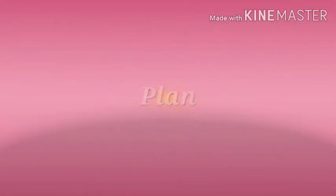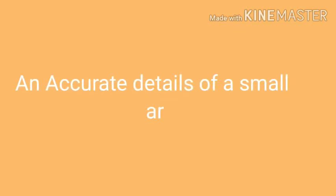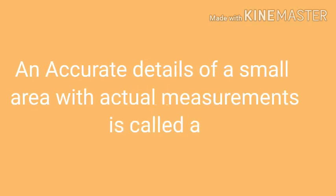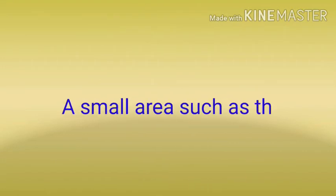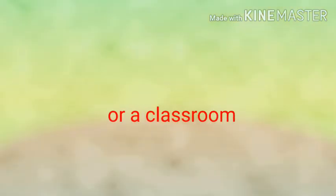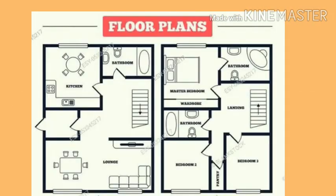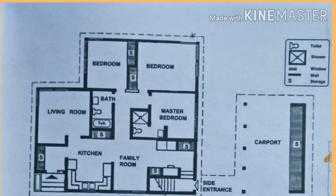A plan is a drawing of a small area on a large scale. An accurate detail of a small area with actual measurements is called a plan. A small area such as the interior of a house or a classroom drawn in detail is an example of a plan. Plans are made to understand the layout of buildings, parks, hospitals, roads, and other public places.